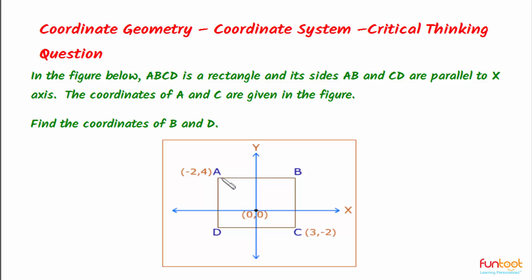It is given that AB is parallel to X axis. Between A and B, one of the coordinates does not change. Which coordinate is this? Well, if we see from A to B, the X coordinate keeps on changing while the Y coordinate remains the same. That means for point B, Y coordinate will be 4 only.